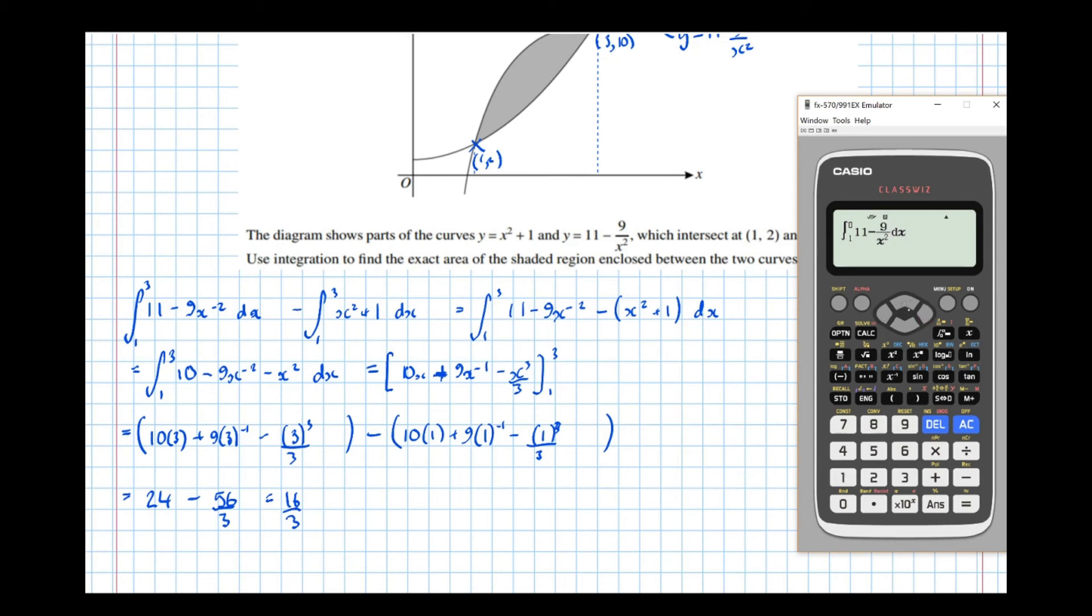Between lower limit 1, upper limit 3. Take, let's do it the original way. The integral of x squared plus 1, lower limit 1, upper limit 3, equals 16 over 3. So we've confirmed that our answer's correct.